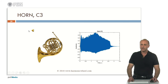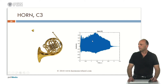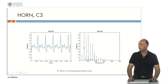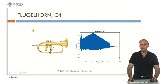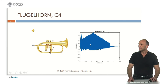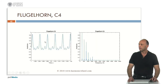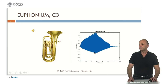Now the brass instruments. The horn, C3. This is the envelope, the waveform and the spectrum. Flugelhorn, C4. Envelope, waveform and the spectrum.